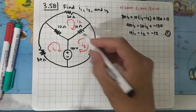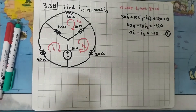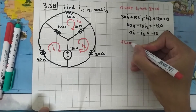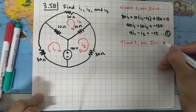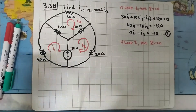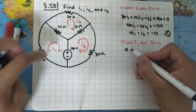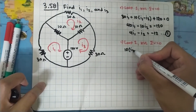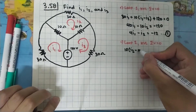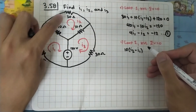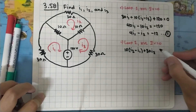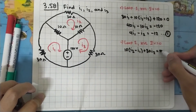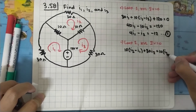Moving on to Loop 2, we start from the 10-ohm resistor, using KVL: sigma V equals zero. The focus is i2, so we multiply by i2, but i1 is flowing in the opposite direction, so minus i1. Moving to the 30-ohm resistor, the only current is i2, so no problem there.